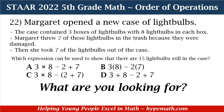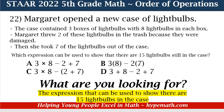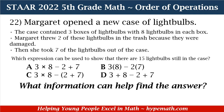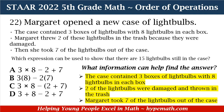Our most important question is: what are we looking for? We are looking for the expression that shows there are 15 light bulbs remaining in the case. This one has a lot of information, so we need to take it step by step. The case contained three boxes with eight light bulbs each; two were damaged and thrown in the trash; and Margaret took seven out of the case. That is all the information we need.